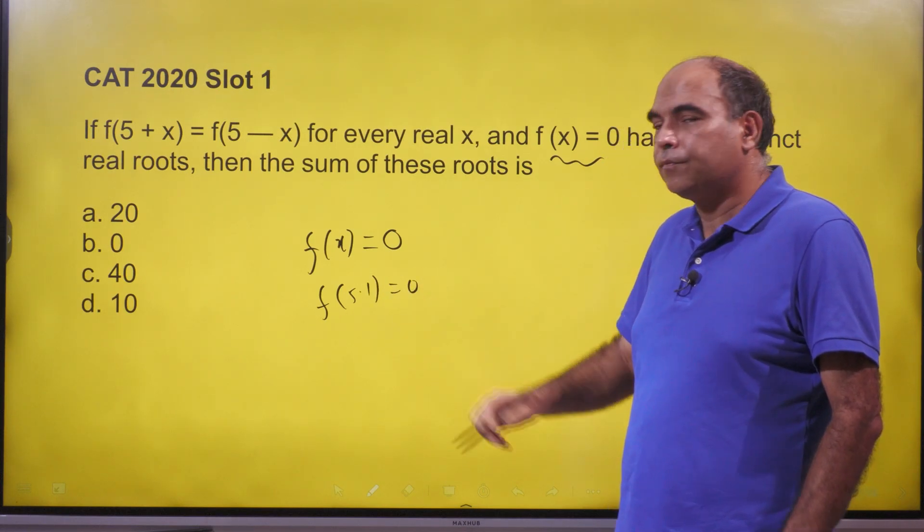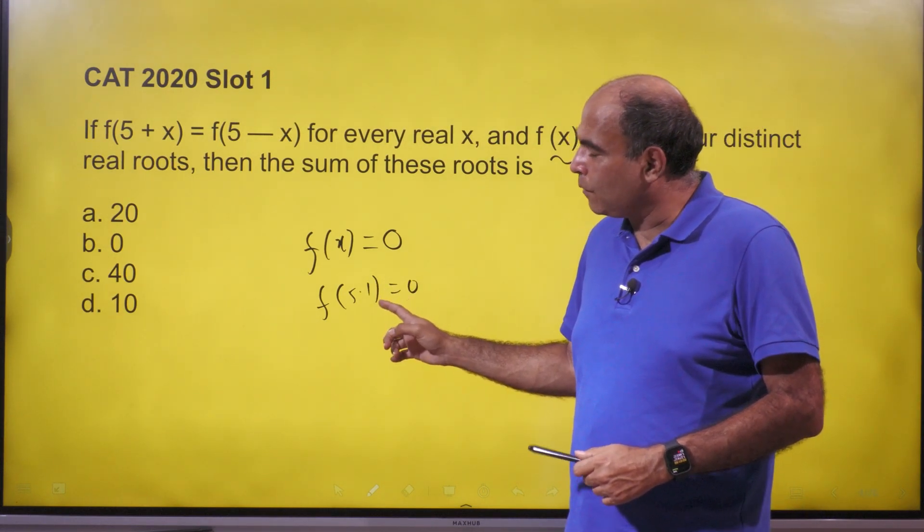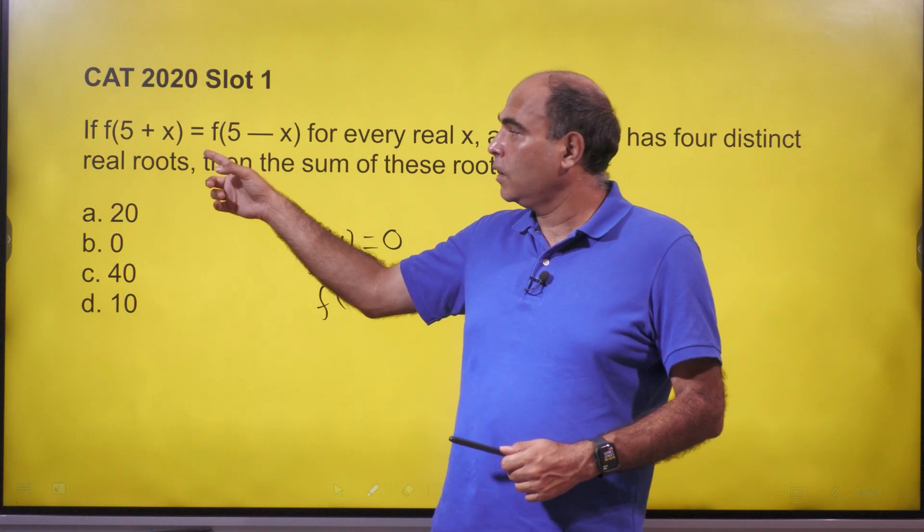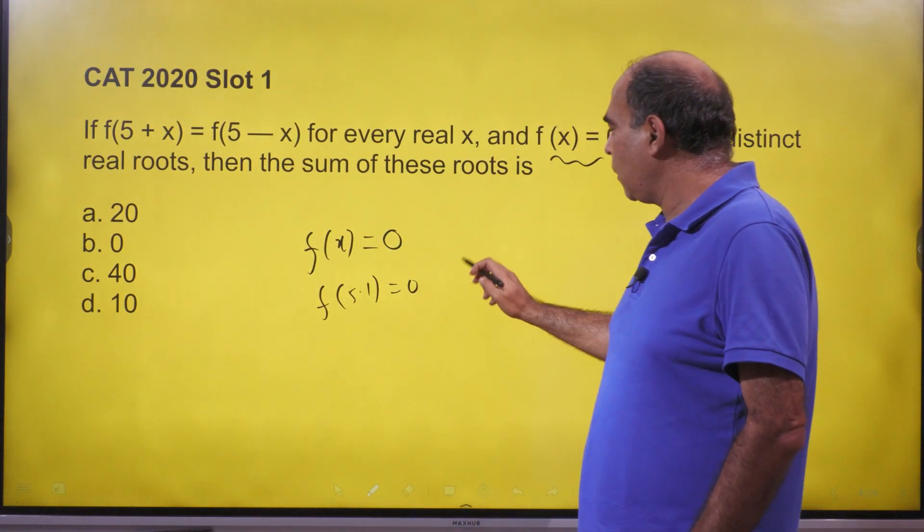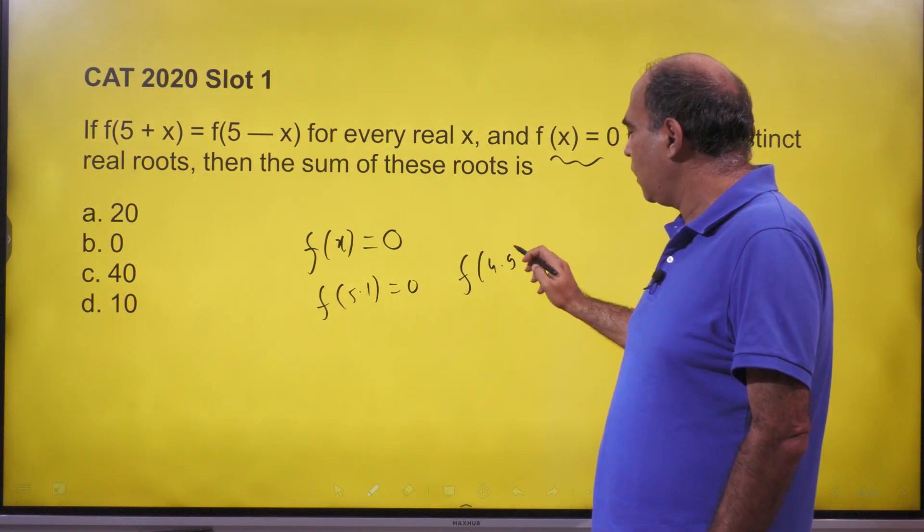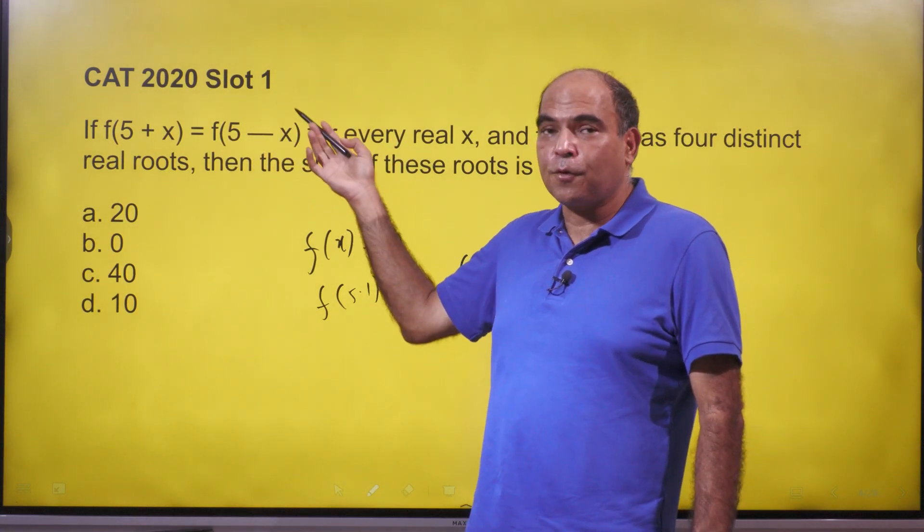If I use this expression, it means the value of x is 0.1 here. And that means if f(5.1) is zero, f(4.9) will also be equal to zero. So f(5.1) and f(4.9) will be equal to each other, so the sum of these two roots will be 10.